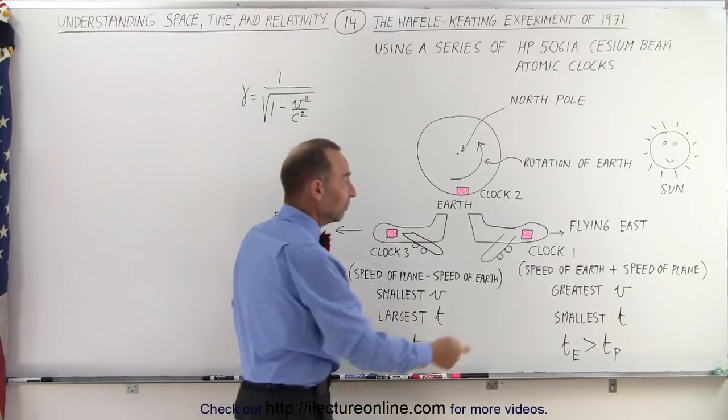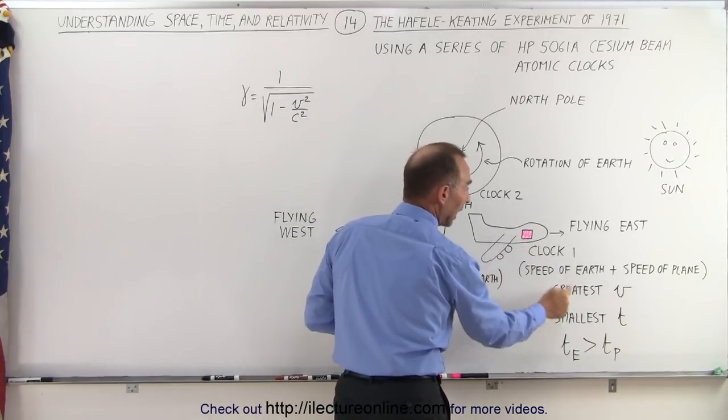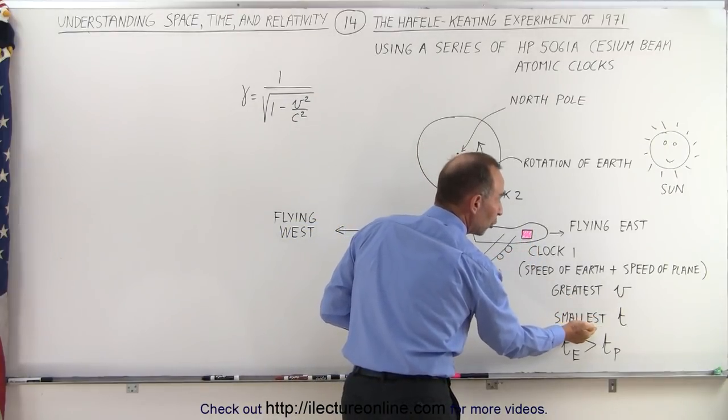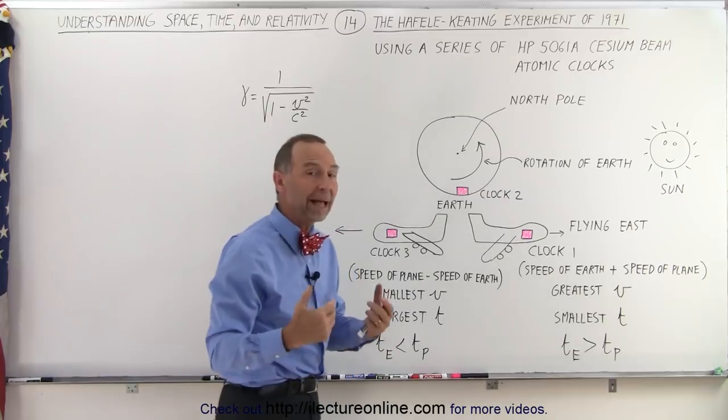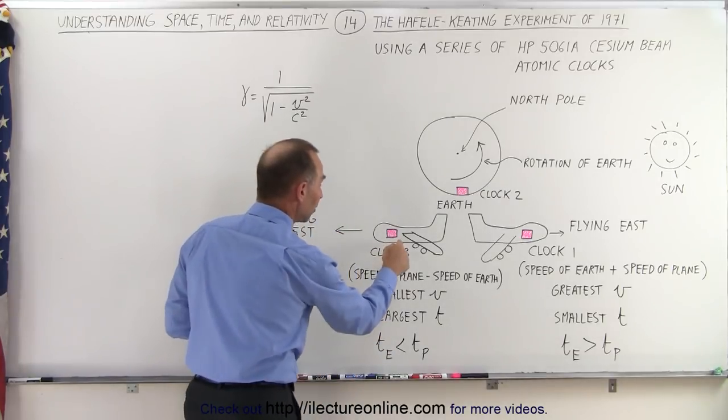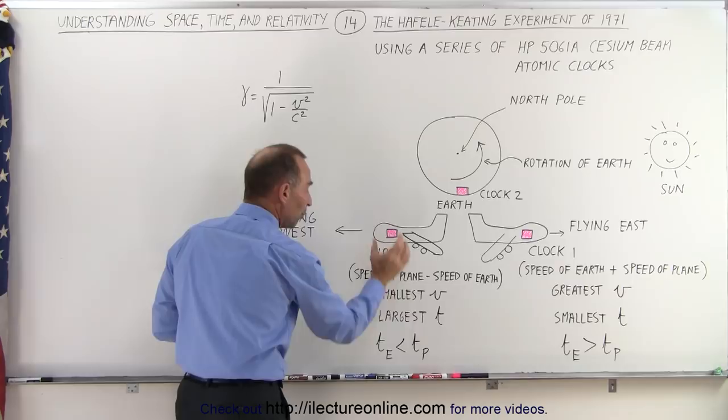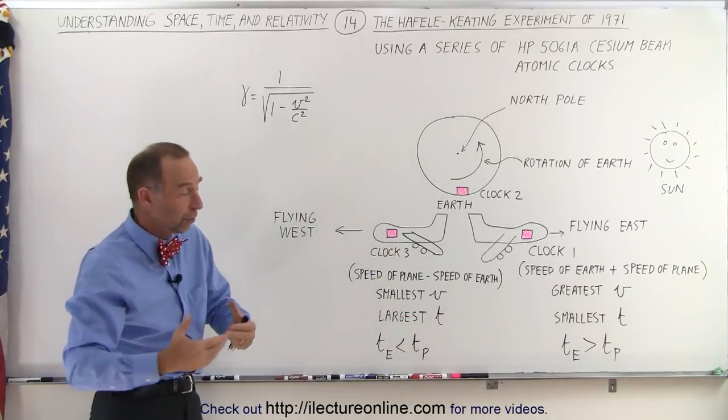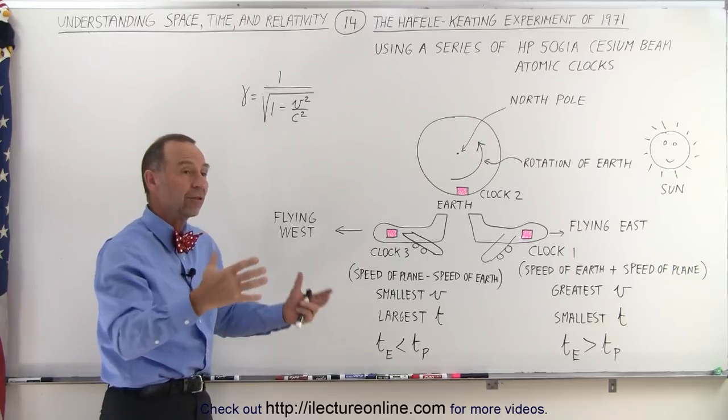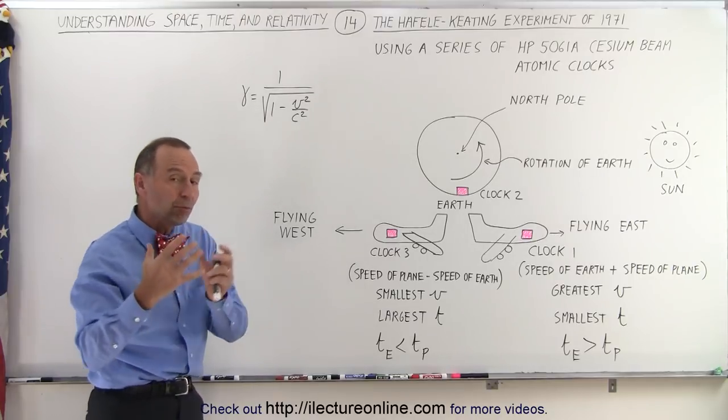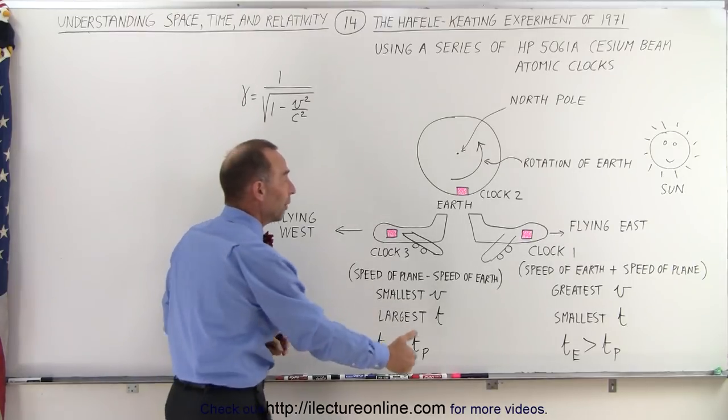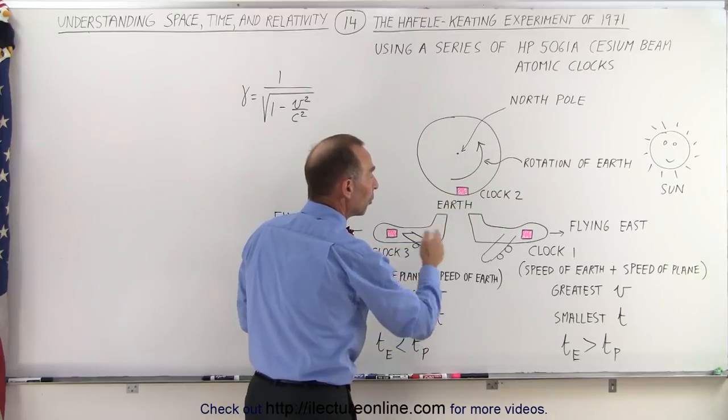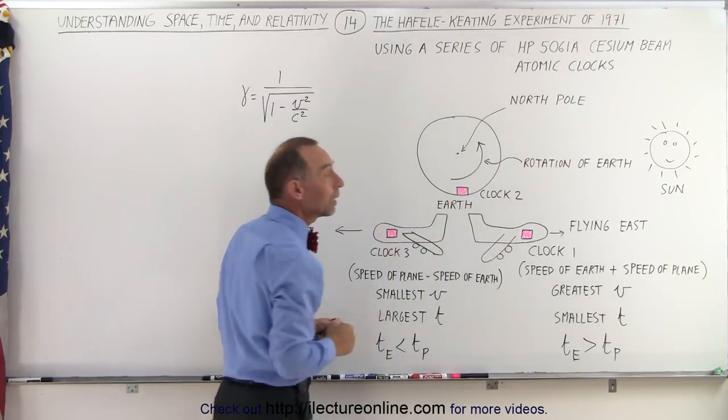In other words, if the clock in this plane had the greatest velocity, it would show the smallest passage of time. The clock moving westward with the smallest velocity would have the largest passage of time. The slower you move, the greater the passage of time. The faster you move, the smaller the passage of time. As a reference, the clocks on Earth should show a time between the two planes.